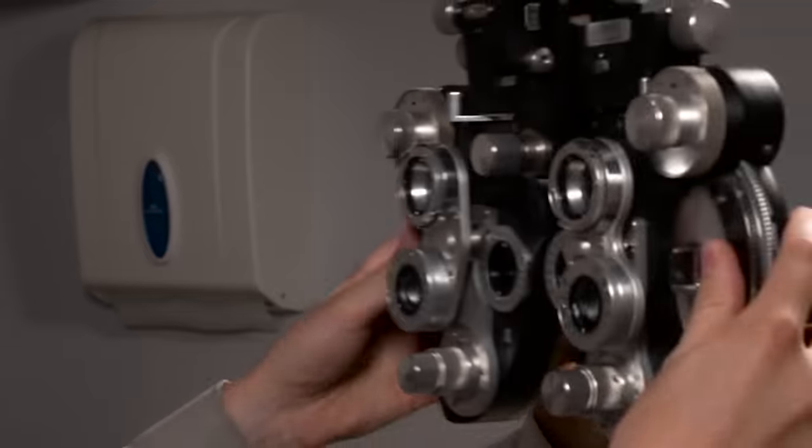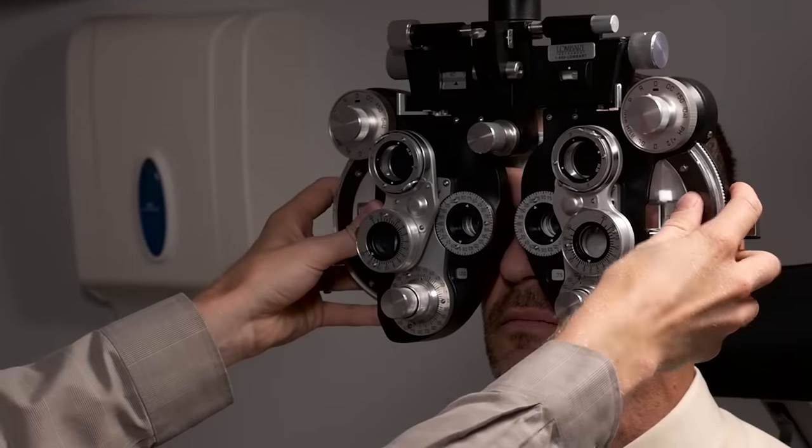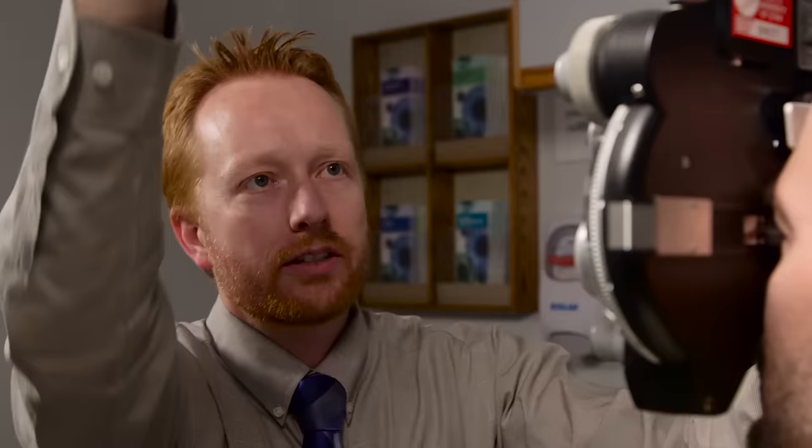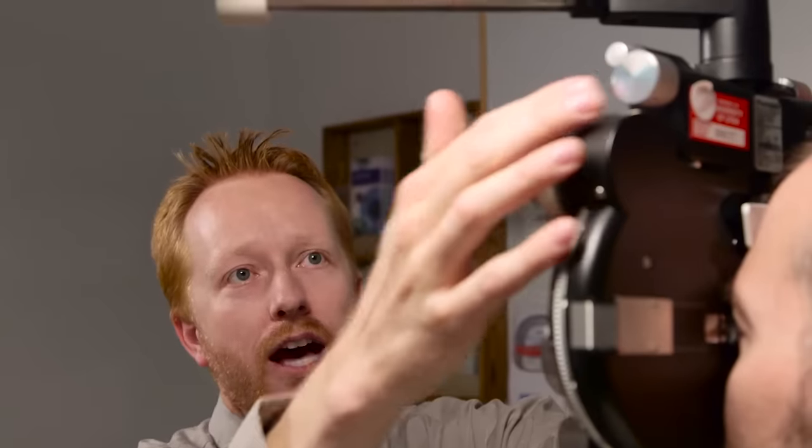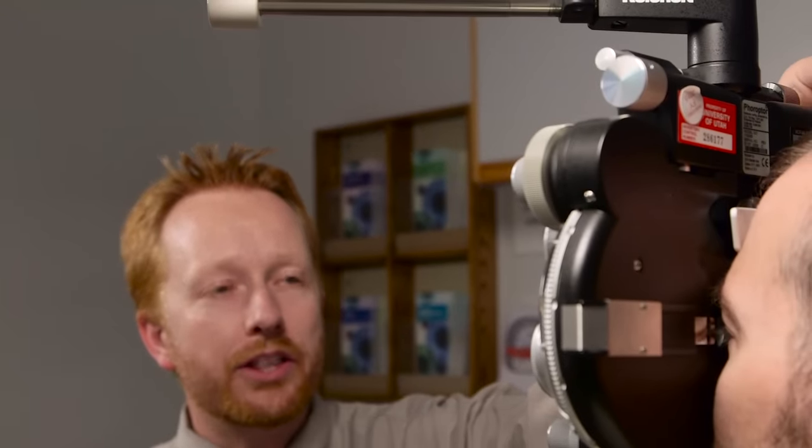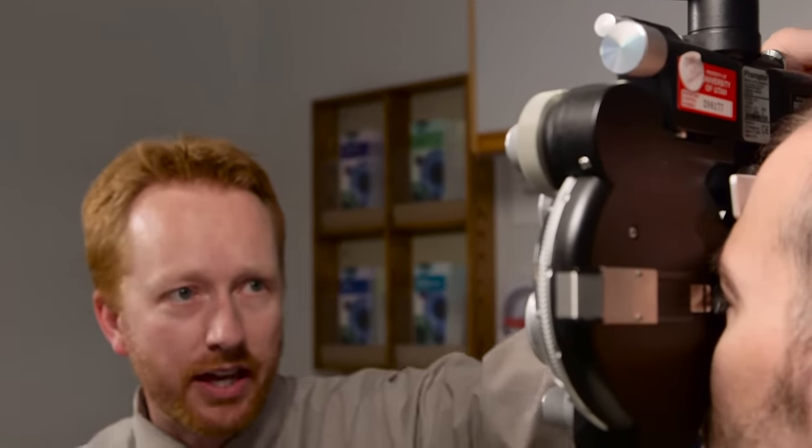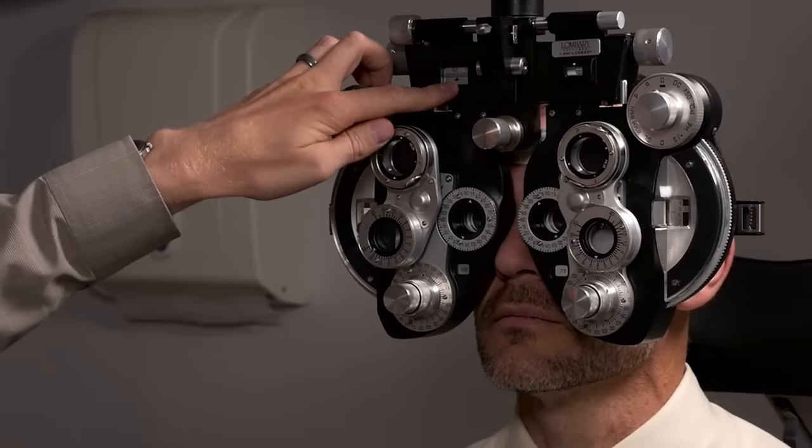To begin the exam will start with calculating a glasses prescription. We're going to start by putting the phoropter in front of the patient and what's really important is first of all to make sure that the pupil distance in the phoropter matches the pupil distance of the patient. There's this knob here at the top that adjusts whether the pupil distance is smaller or larger. In this case this patient has a pupil distance of 62 and so I'm going to set it up here at this indicator line at 62.